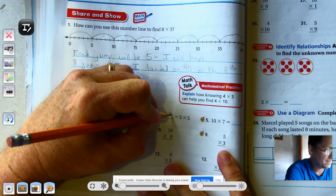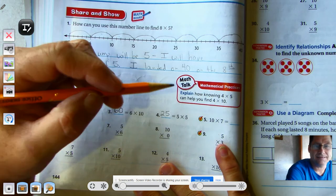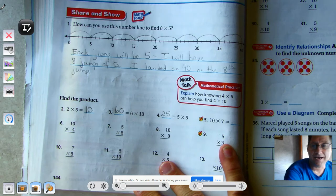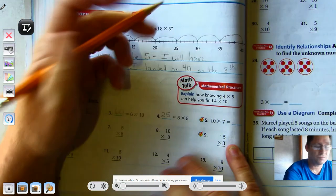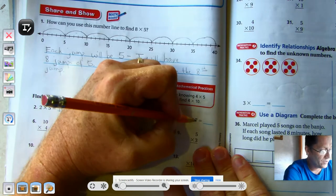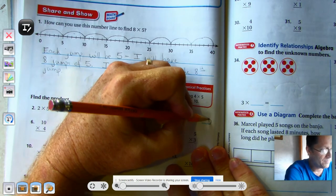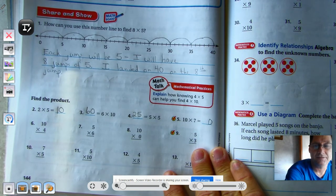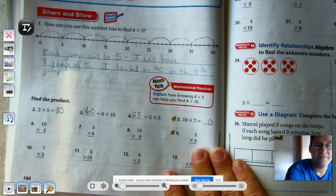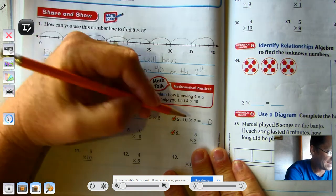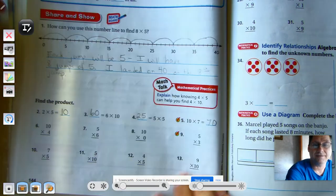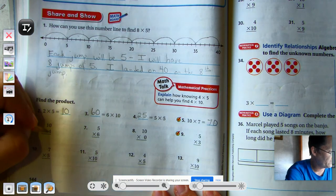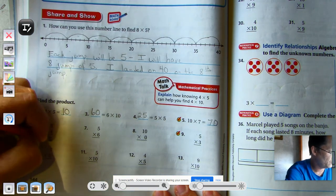7 times 10. Now, of course, I could count 10s 7 times, but there is a pattern when we multiply by 10s. We know that when I multiply by 10s, or 10 is a factor of the multiplication problem, that the problem has to end in 0. And so we can just go 7 times 1, so 7 tens is 70, so 4 tens would be 40.